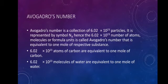That specific value is 6.02 × 10²³. Avogadro's number is the collection of 6.02 × 10²³ particles, and it is represented by the symbol Nₐ. Hence, 6.02 × 10²³ number of atoms, molecules, and formula units is called Avogadro's number.